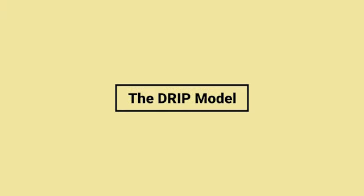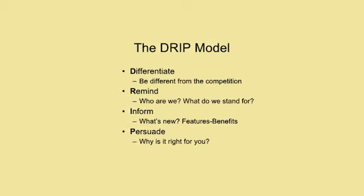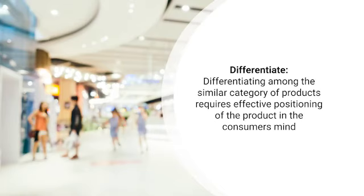The DRIP model is another acronym: D for Differentiate, R for Remind, I for Inform, and P for Persuade. For example, if all soaps in the market had their brand names removed, you would not be able to identify them — maybe by fragrance, shape, or color. But there are numerous soaps with the same fragrance, color, shape, and packaging. What makes the difference is the brand name and packaging — that is how you differentiate one product from another.